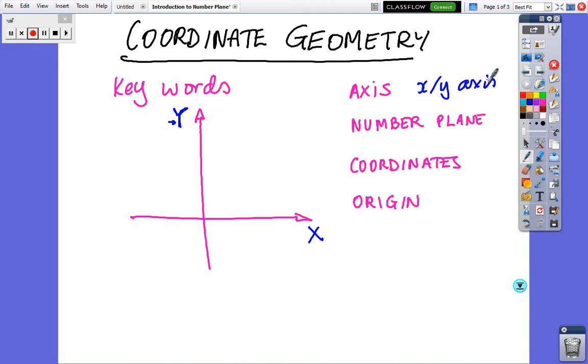Now the whole diagram, this whole thing, is called the number plane. So the whole diagram is called the number plane, and we're going to plot points and the points are called coordinates.